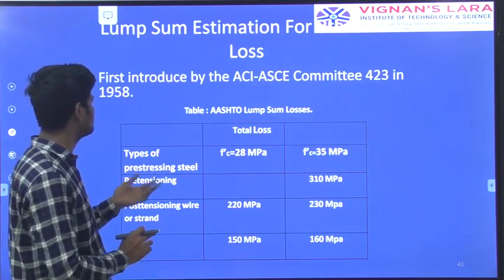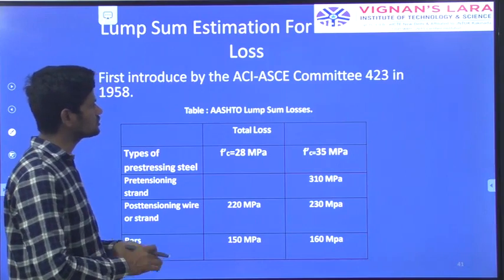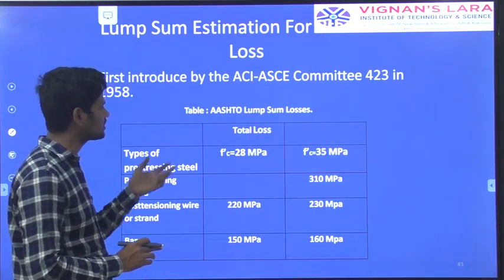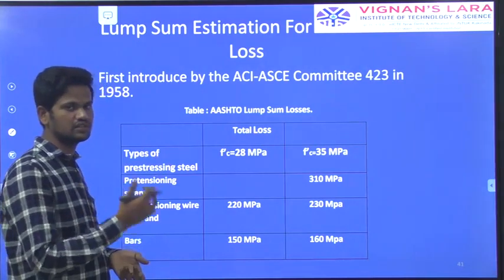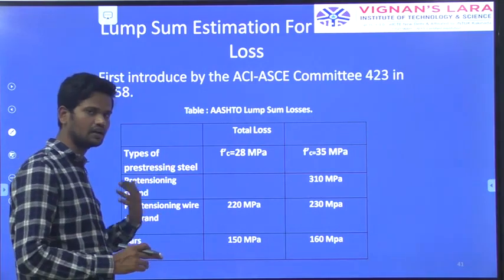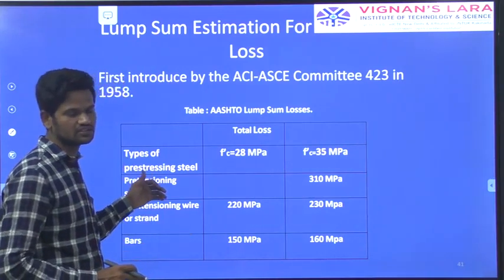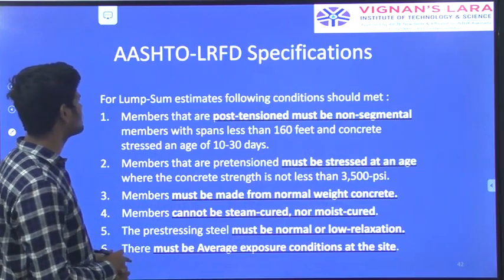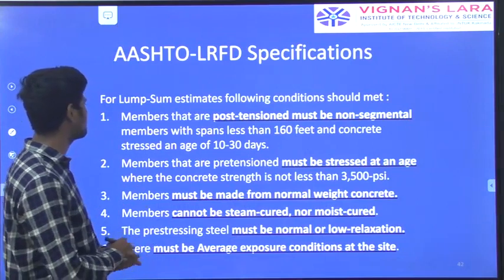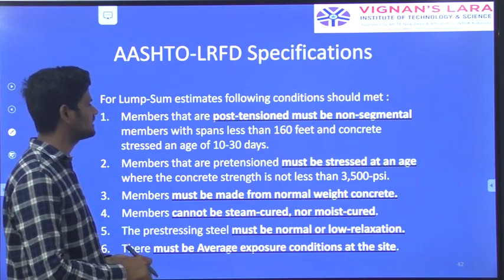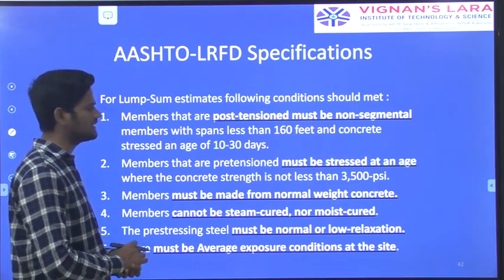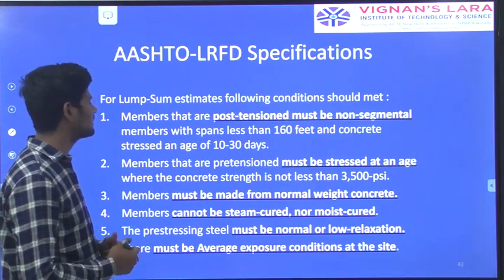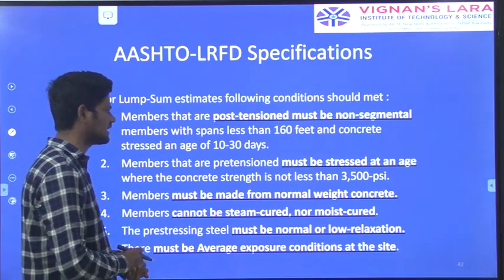Lump sum estimation for loss of pre-stress was first introduced by the American Concrete Institute to the American Society of Civil Engineering Committee 143 in 1958. The American Association of Highway Transportation also gives conditions based on how much total loss will occur for the grade of pre-tensioned concrete. Members that are post-tensioned must not be segmental members, with spans less than 160 feet and concrete stress at age 10 to 30 days. Pre-tensioned members must be stressed when concrete strength is not less than 3000 psi.